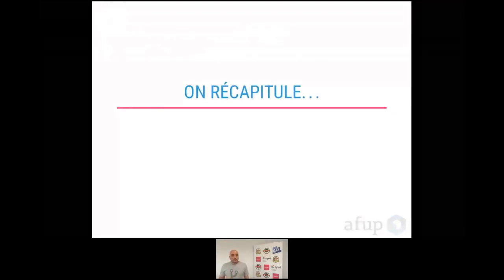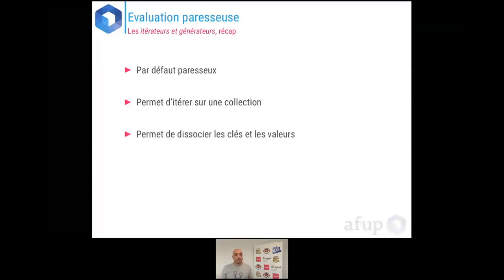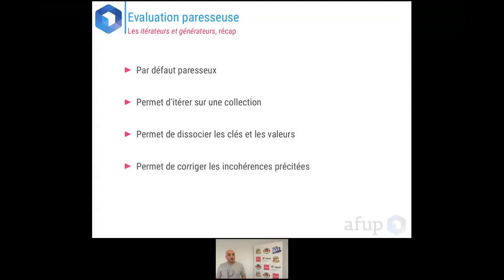Récapitulatif : l'évaluation paresseuse avec les itérateurs et générateurs, c'est paresseux par défaut. Ça vous permet d'itérer sur une collection, de facilement dissocier les clés et les valeurs, et de lever les contraintes liées aux tableaux PHP. Ça permet de corriger des incohérences précitées. C'est à utiliser en connaissance de cause : lorsque vous écrivez un générateur, ne vous attendez pas à ce qu'il retourne le résultat global dès le premier appel — vous devez itérer ou utiliser une autre fonction pour récupérer tous les résultats d'un coup.